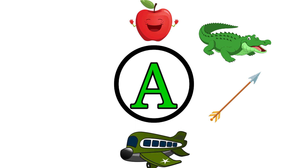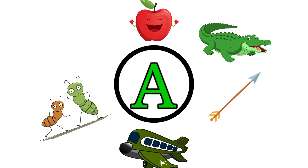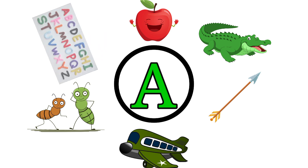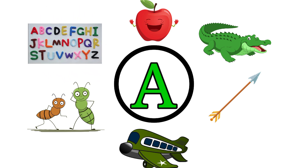A for aeroplane. Aeroplane means hawaijahaj. A for ants. Ants means cheetiaan. A for alphabets. Alphabet means alphabets.